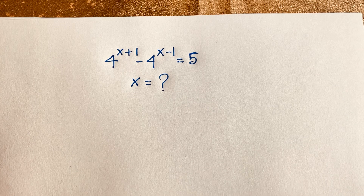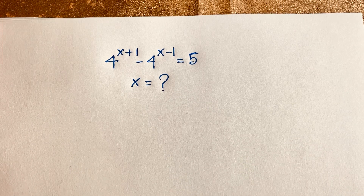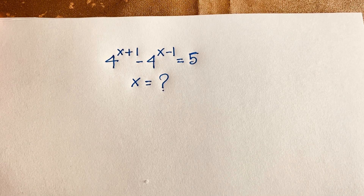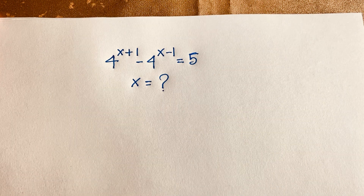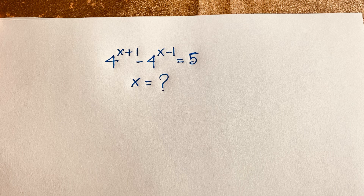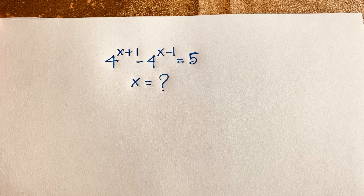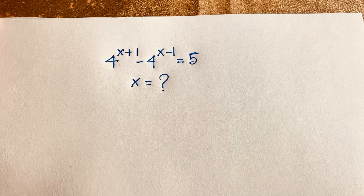Hello everyone. In this video, we have solved this interesting exponential equation. The question is: 4 to the power x+1 minus 4 to the power x−1 is equal to 5. How to solve this interesting exponential equation? Let's start.